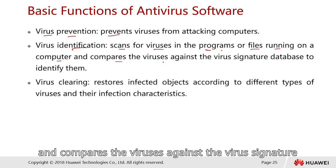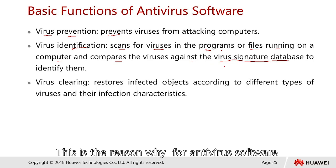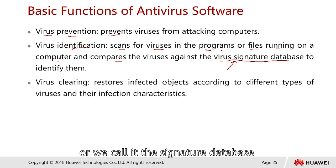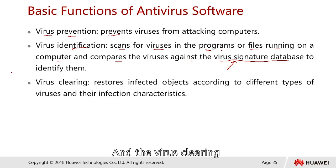Virus identification allows the antivirus to scan for viruses in programs or files running on the computer, and compare them against a virus signature database to identify them. This is why antivirus software must constantly run updates for its patterns, also called the signature database, which varies depending on the individual vendor.